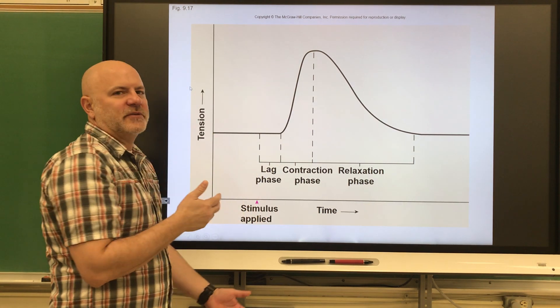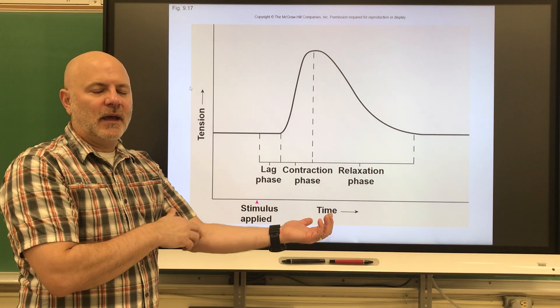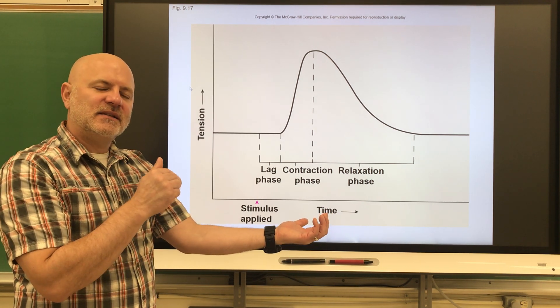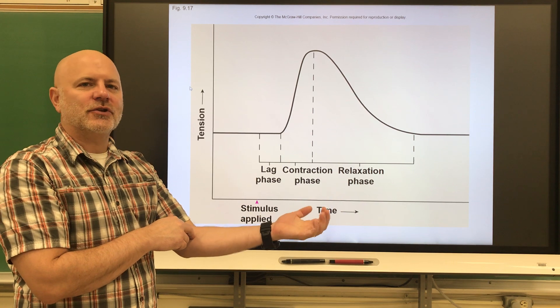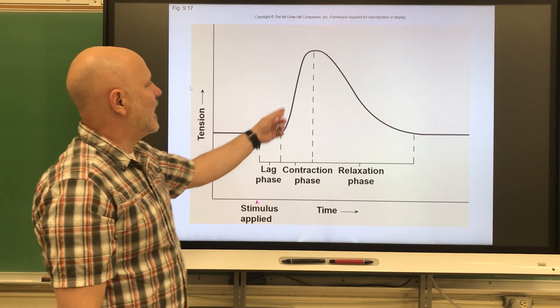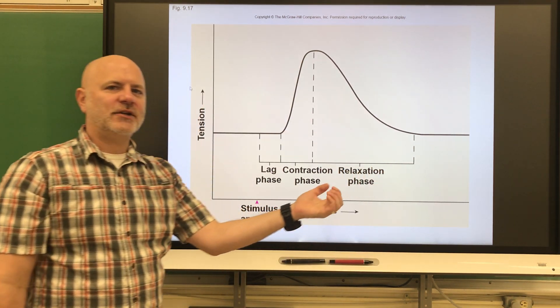If you hooked up to an electrode and we isolate a single muscle, we send a single signal to that, your muscle will contract and relax. That's what we see here, this contraction and relaxation.